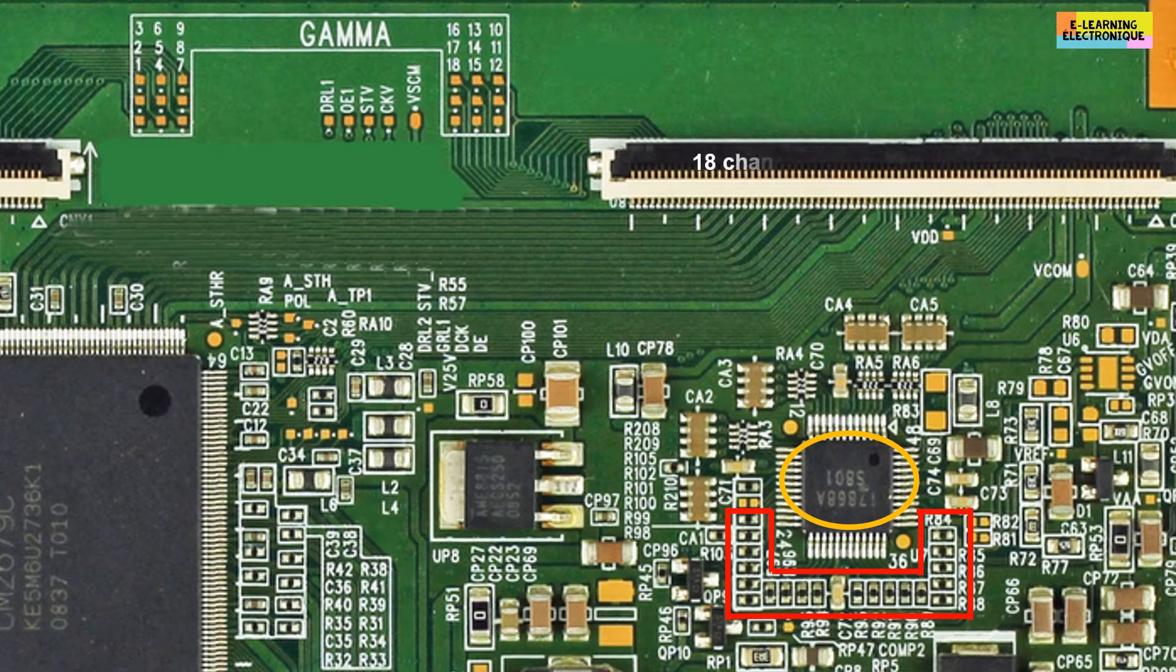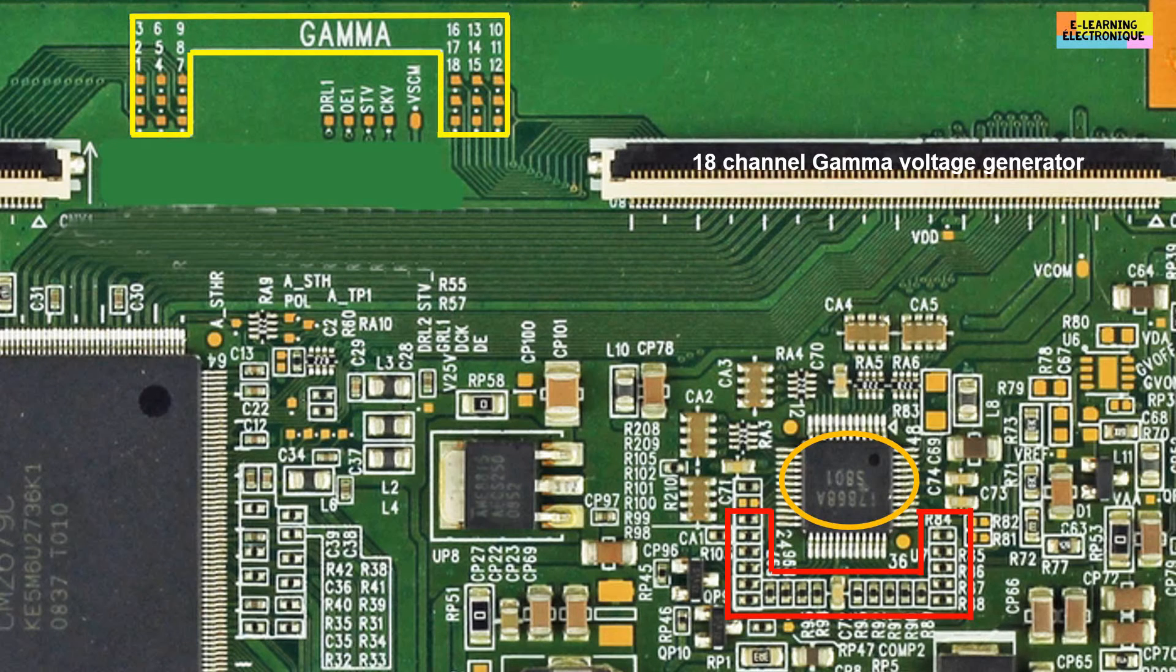The datasheet here informs us that the chip can handle up to 18 different voltages. As we can see at the top of this card, there is clearly the inscription of the word gamma, and right next to it there is a numbering going from 1 to 18 with orange color dots corresponding to test points to measure the 18 voltages of the gamma. Note that all the tracks of the gamma go to the two connectors of the T-Con to the LCD panel.